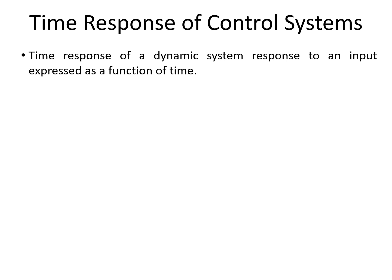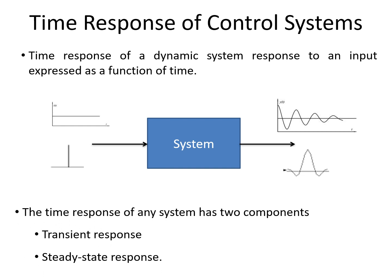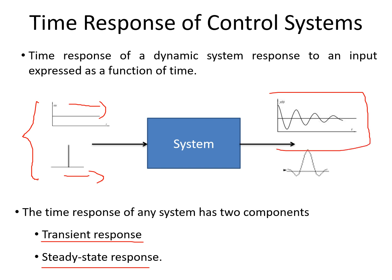Coming to the time response of a control system: the time response of a dynamic system is the response to an input expressed as a function of time. We have two types of response — one is called transient response and another is called steady state response. For a step signal input, this is the type of response you get, and for an impulse signal, this is another type of response. We will see about steady state response and transient response in the upcoming slides.